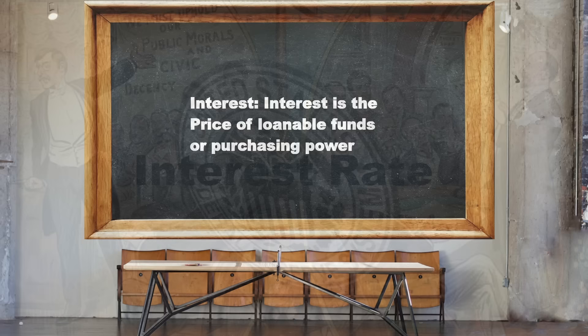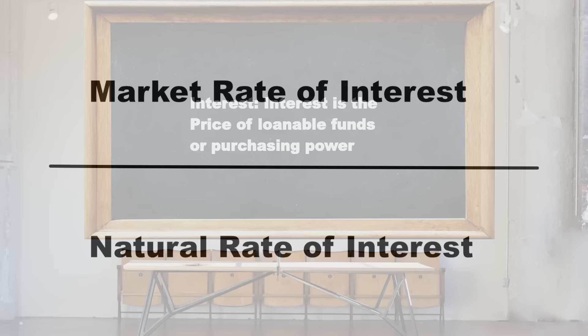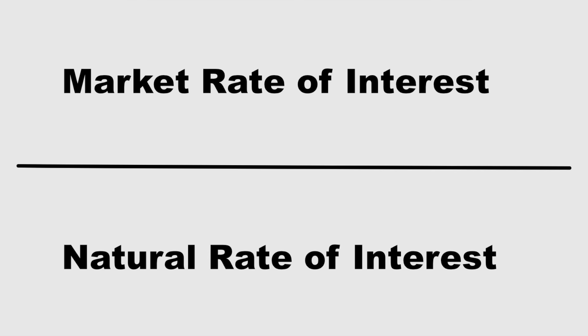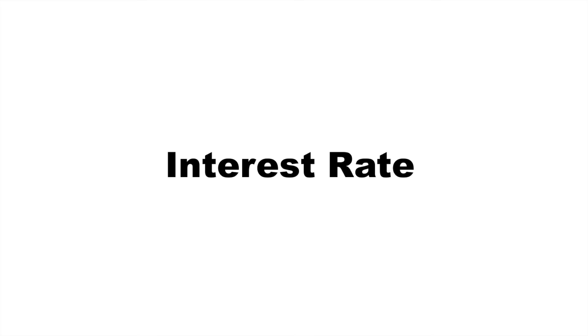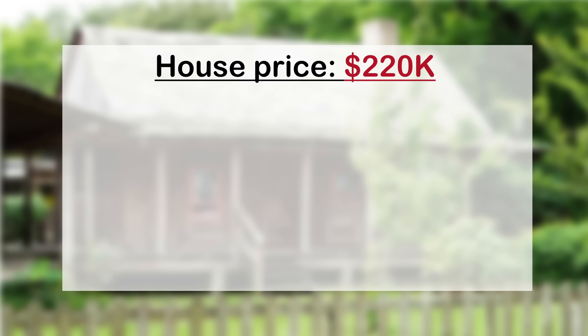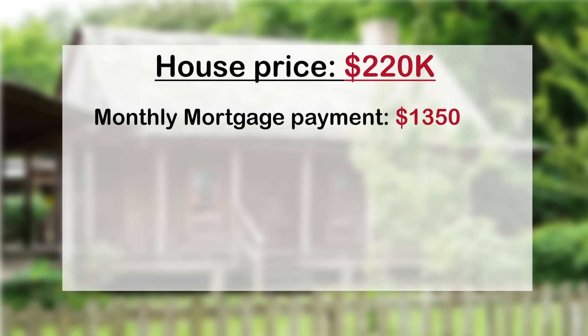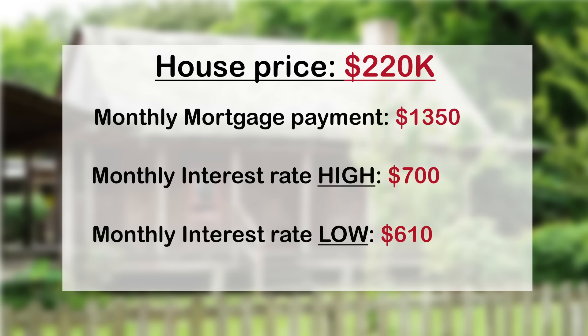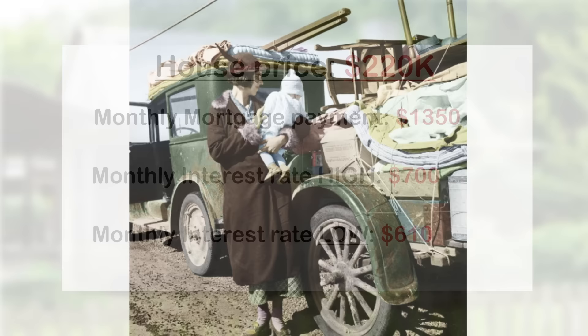Interest is the price of loanable funds or purchasing power. The mechanics of this process of monetary disequilibrium are explained regarding an interplay between what is known as the market rate of interest and the natural rate of interest. Conceptually, what is an interest rate? An interest rate is the price of money with time value factored in — in a modern economy, more precisely the price of loanable funds. Interest is a price — the price of loanable funds or credit. Any price is a mechanism that brings markets to equilibrium. Conversely, if any price in any market is incorrect, then disequilibrium results.